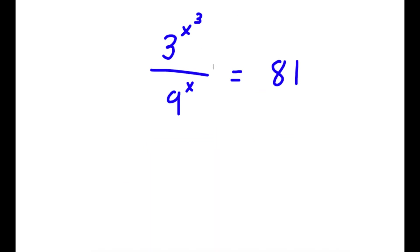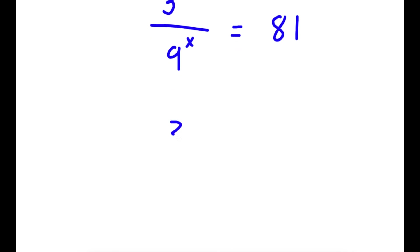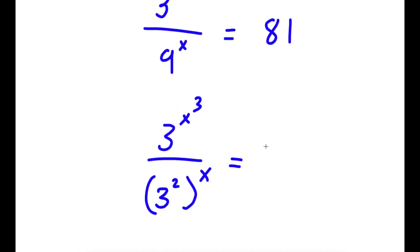In this problem, I have 3 to the power of x to the power of 3 over 9 to the power of x is equal to 81. To start, I'm going to rewrite all of these terms: 9 to the power of x as 3 squared to the power of x, and 81 as 3 to the power of 4. The reason is that now all bases are 3.